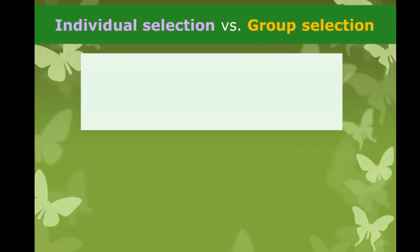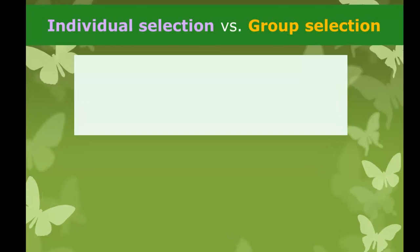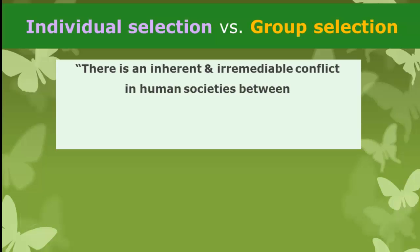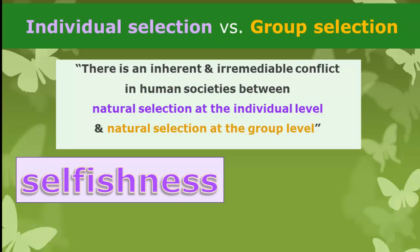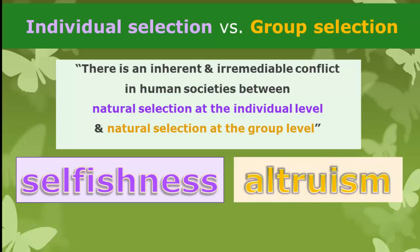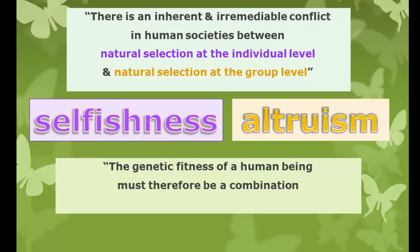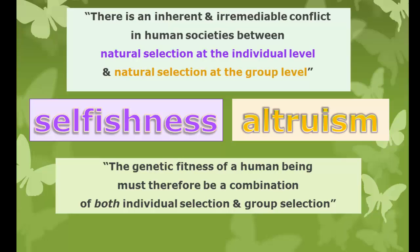There's a big contrast Wilson focuses on: two levels of selection both acting simultaneously. He argues there is an inherent and irremediable conflict in human society. What we get from individual competition within societies is our selfishness, while altruism and pro-social behaviors have been the result of group selection. Therefore, the genetic fitness of a human being must be a combination of both individual selection and group selection, and these selfish and selfless dimensions of human behavior have different selective roots.